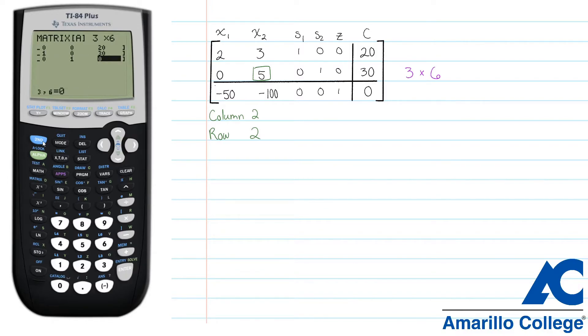When you're done, press second and quit. The calculator will remember your matrix as just the letter A, and the pivot program knows to work on that particular matrix. So go back to your program menu, find pivot, press enter, and press enter one more time.